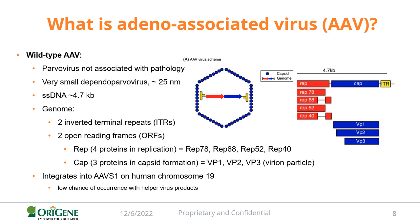AAV has a single-stranded DNA genome, compared to Lenti's single-stranded RNA genome. This DNA genome contains three genes: the REP gene for replication, CAP for capsid, and AAP for assembly. The coding sequences are flanked by ITRs — inverted terminal repeats — required for genome replication and packaging. The REP proteins are involved in replication, and the VP proteins make up the virus capsid and also code for the assembly-activating protein AAP.